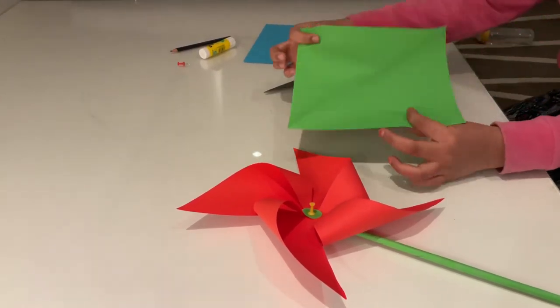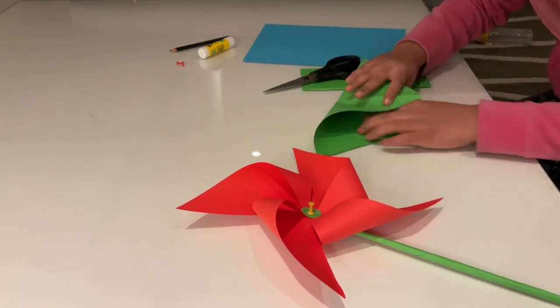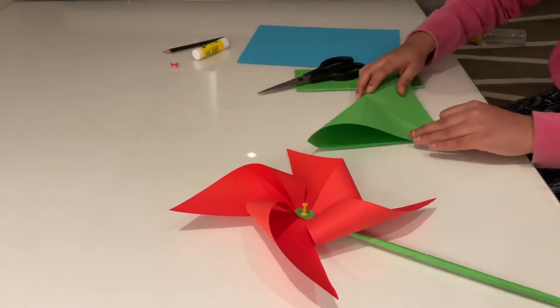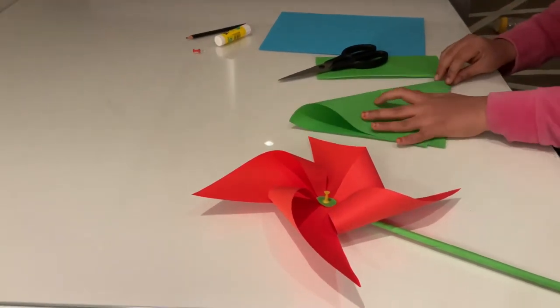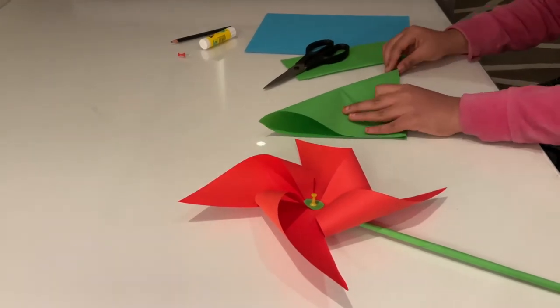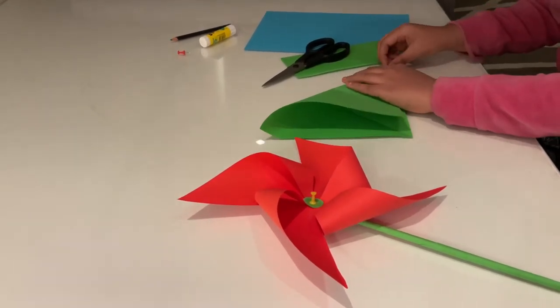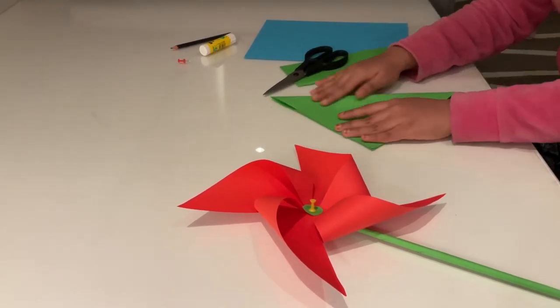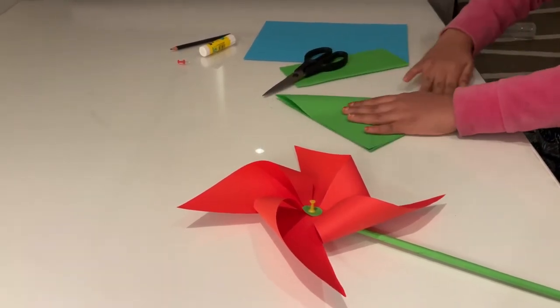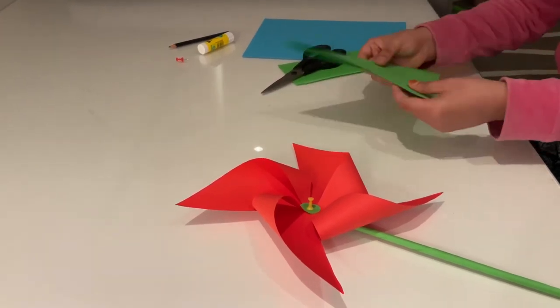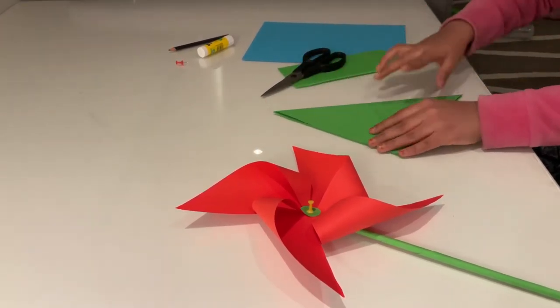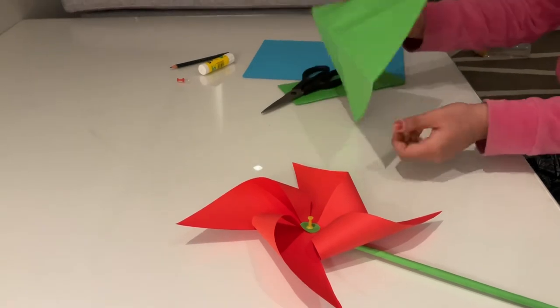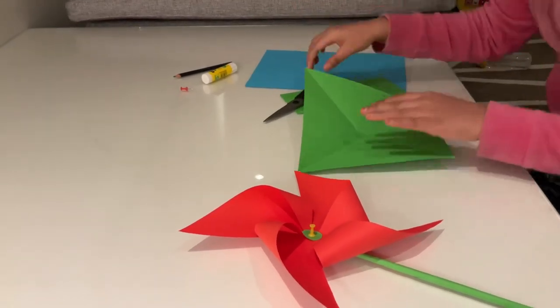After cutting it looks like this. Fold one side so it will become, you can fold it like two sides. Now after folding take this, it looks like this. Now take the scissor.